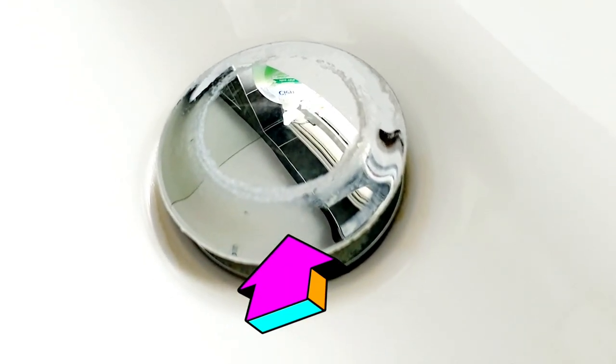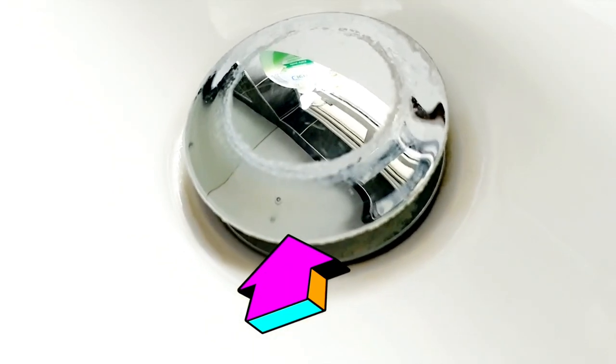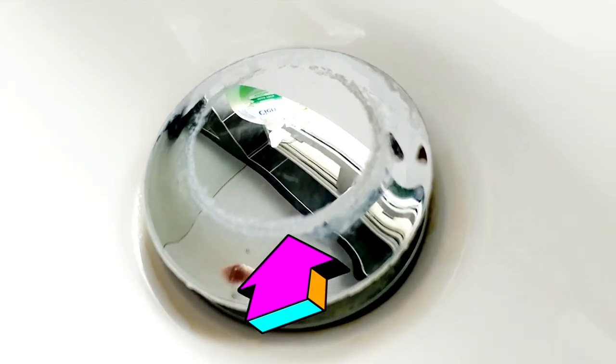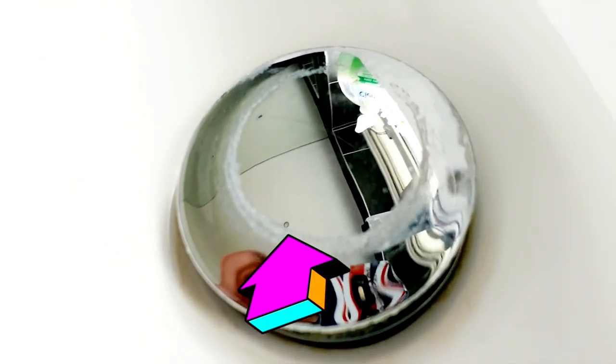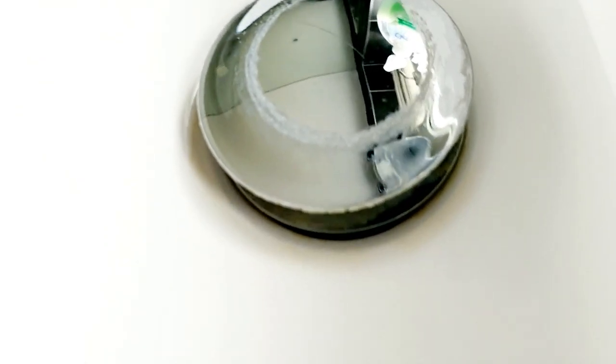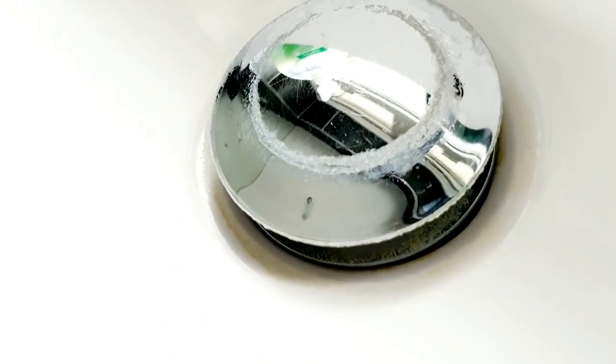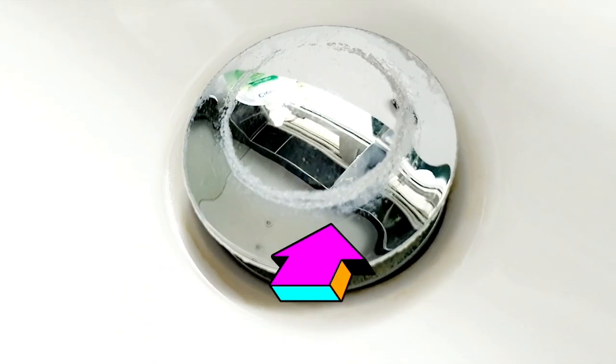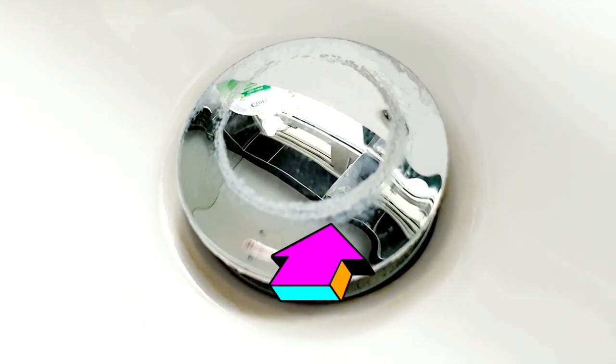As you can see the sink drain stopper, you can see the rim looks like a rim around it. Basically it's there because this area has hard water. Whenever you've got hard water in your area, your sink drain stopper may get buildup of calcium deposits.